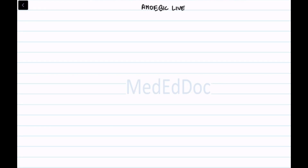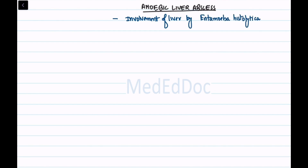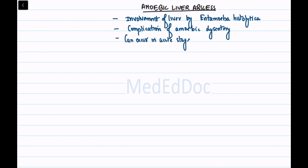Amoebic liver abscess is a condition caused by the involvement of the liver by the parasite Entamoeba histolytica. It is almost always a complication of amoebic dysentery, which can occur in the acute stage or in the chronic carrier stage.